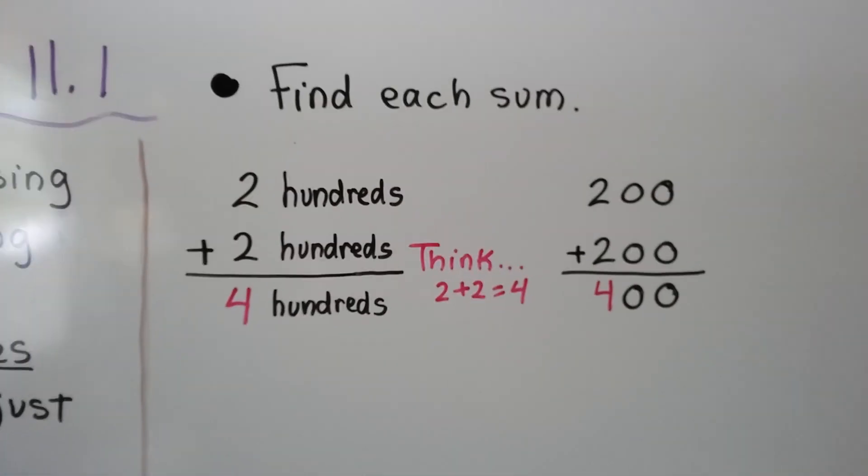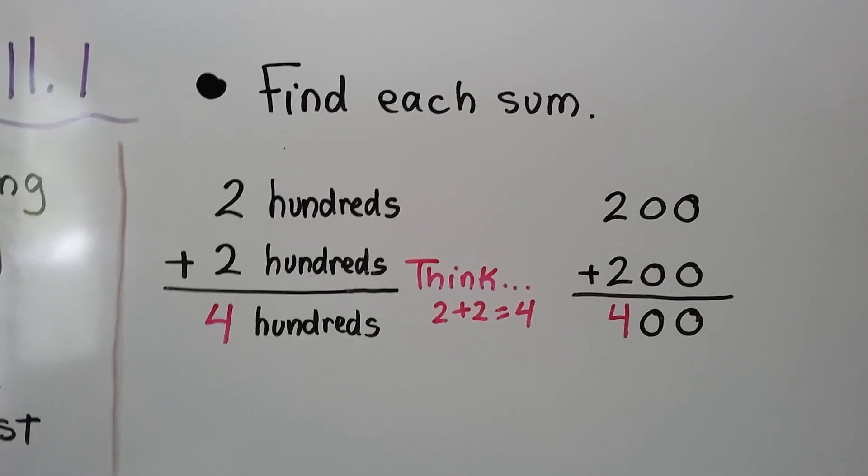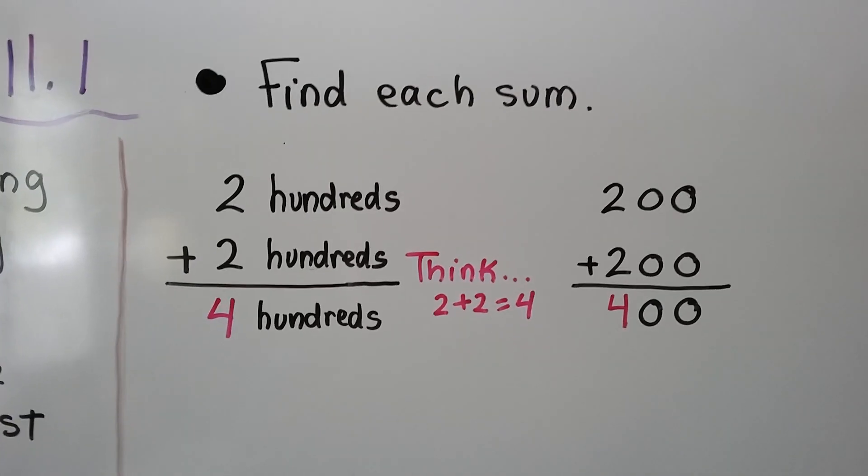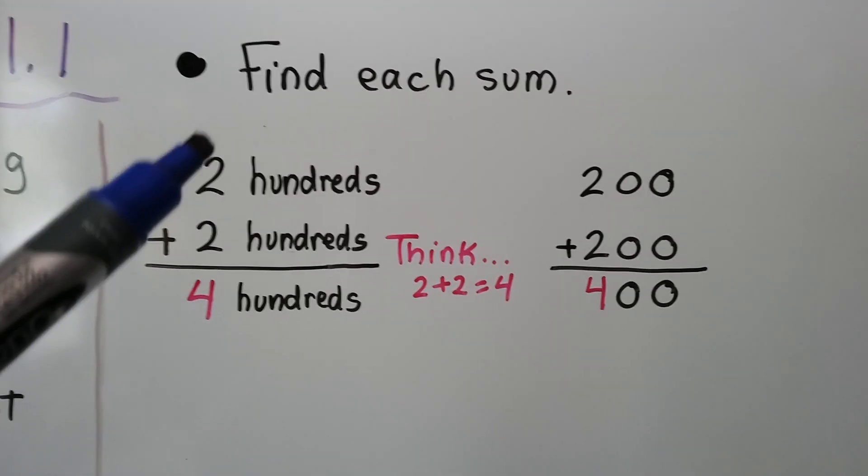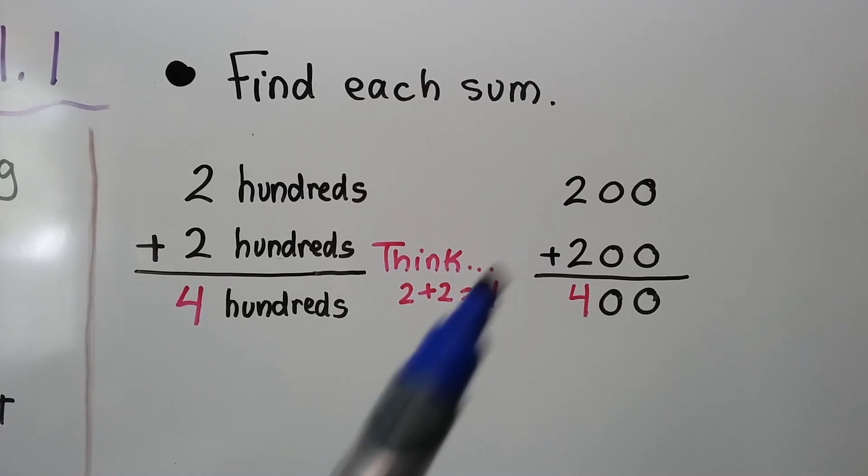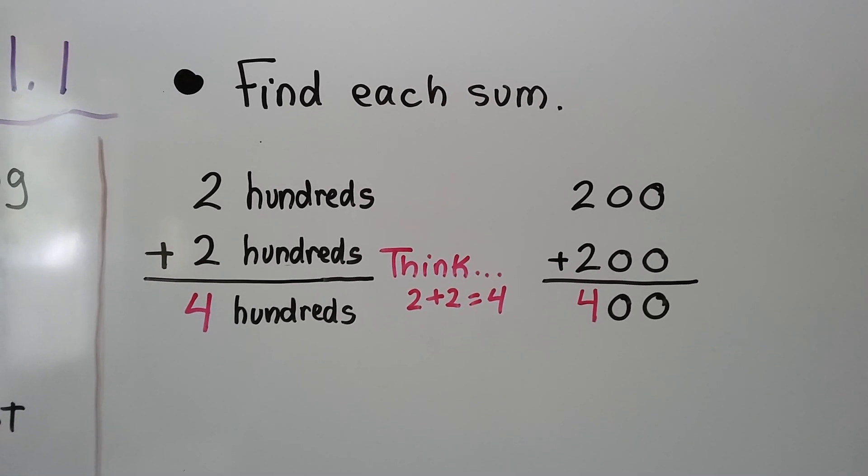It tells us we need to find each sum. Two hundreds plus two hundreds, we think 2 plus 2. 2 plus 2 is 4, so 200 plus 200 equals 400.